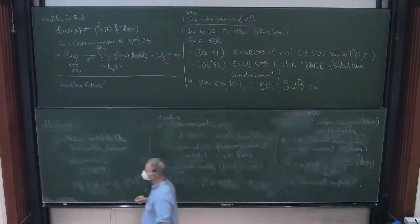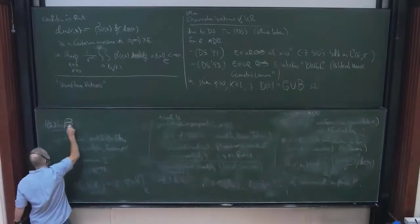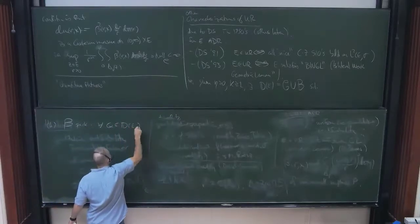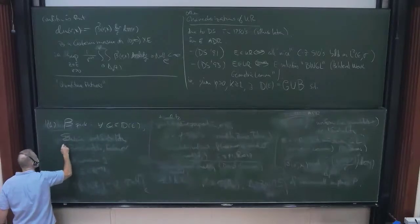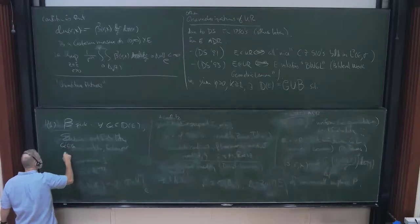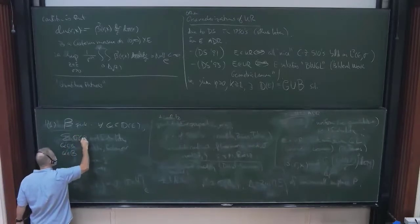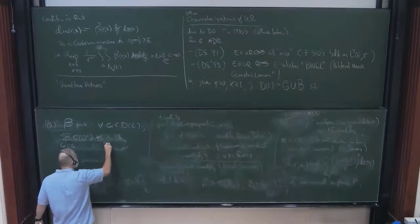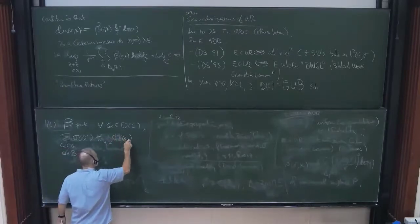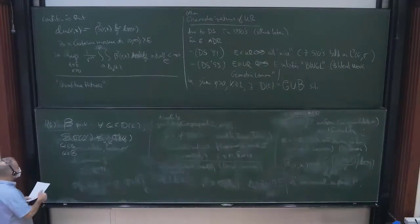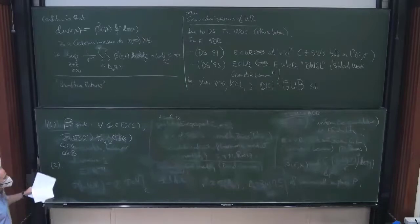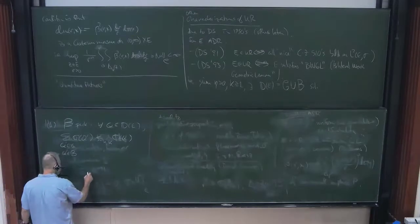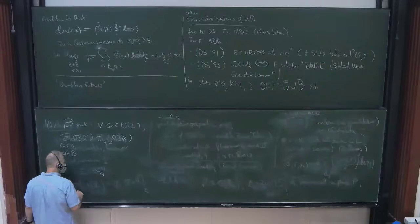In such a way that, first, the bad cubes pack, meaning that for all Q in this dyadic grid, if you look at the sum of the Q primes contained in Q, such that Q prime is a bad one, sum up their measures. It's going to be bounded, depending on eta and K, by the sigma measure of the top cube Q. And second, rather than take time to write out the exact criterion, I'm just going to draw you a picture. I think that illustrates things better.